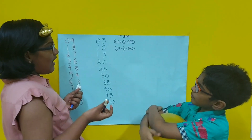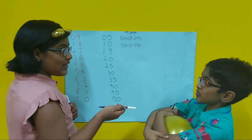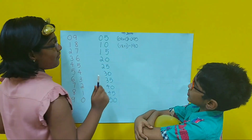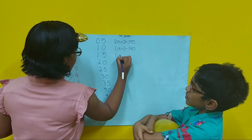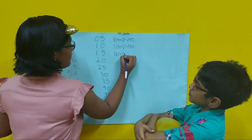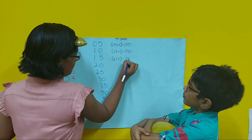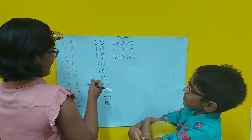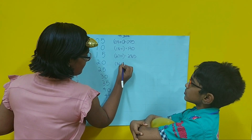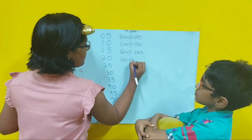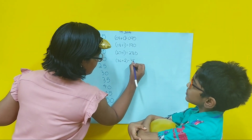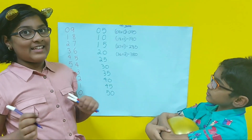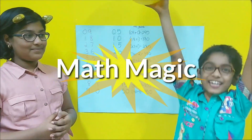I think you got the trick. Yes. So now you will tell me what the answer is and I will write. 95 into 3: 27, plus 1 equals 28, and place the 5. 95 into 4: 36 plus 2 equals 38, with 0. And then the process goes on like this. Yay! We completed!